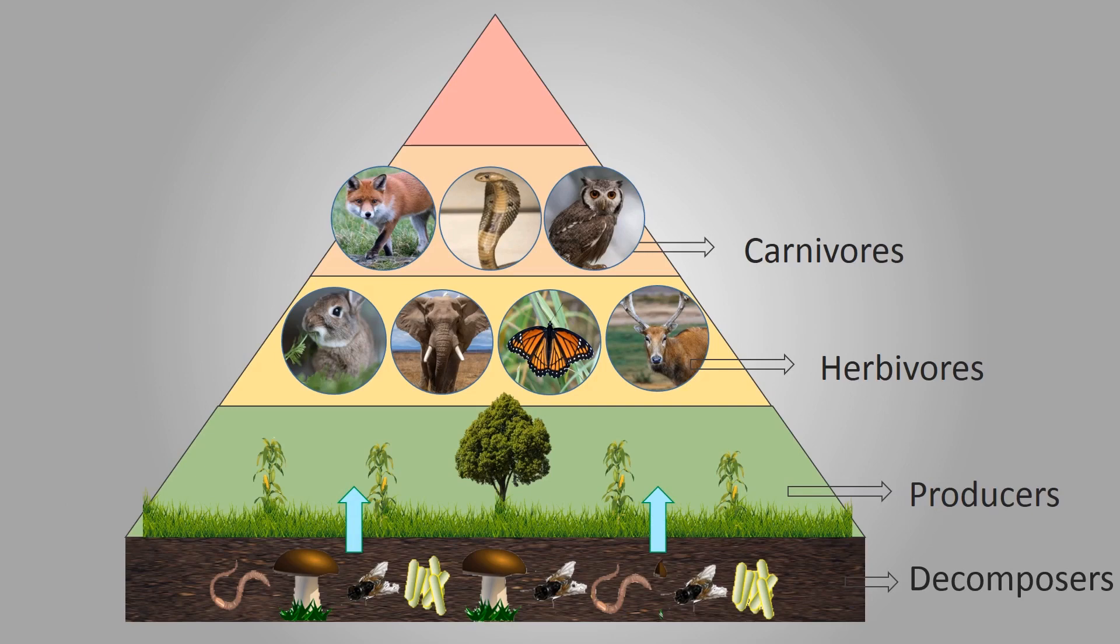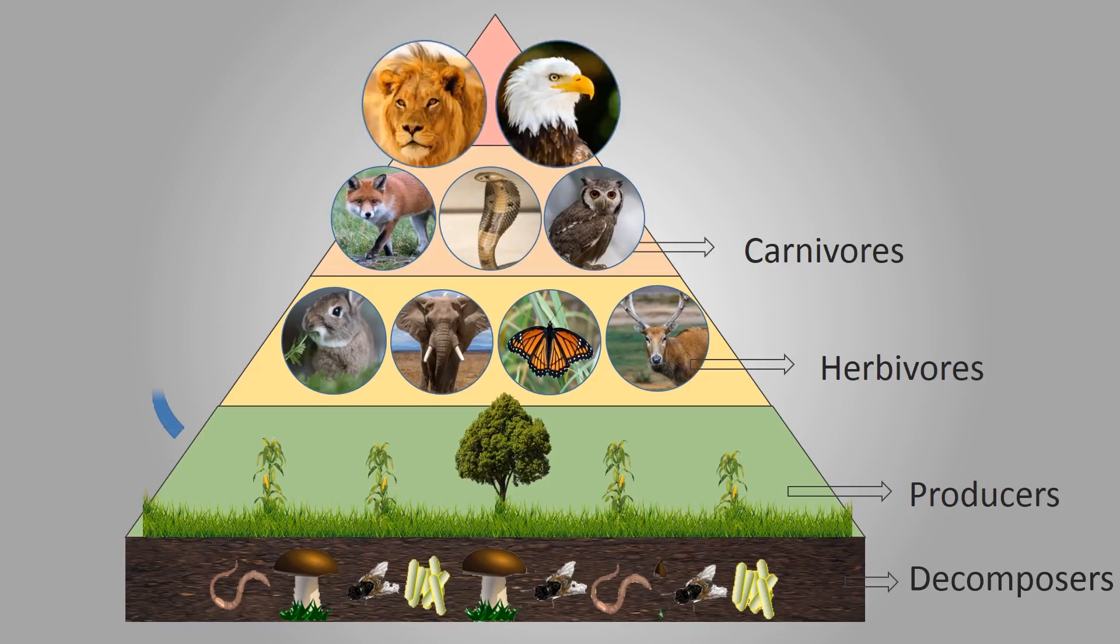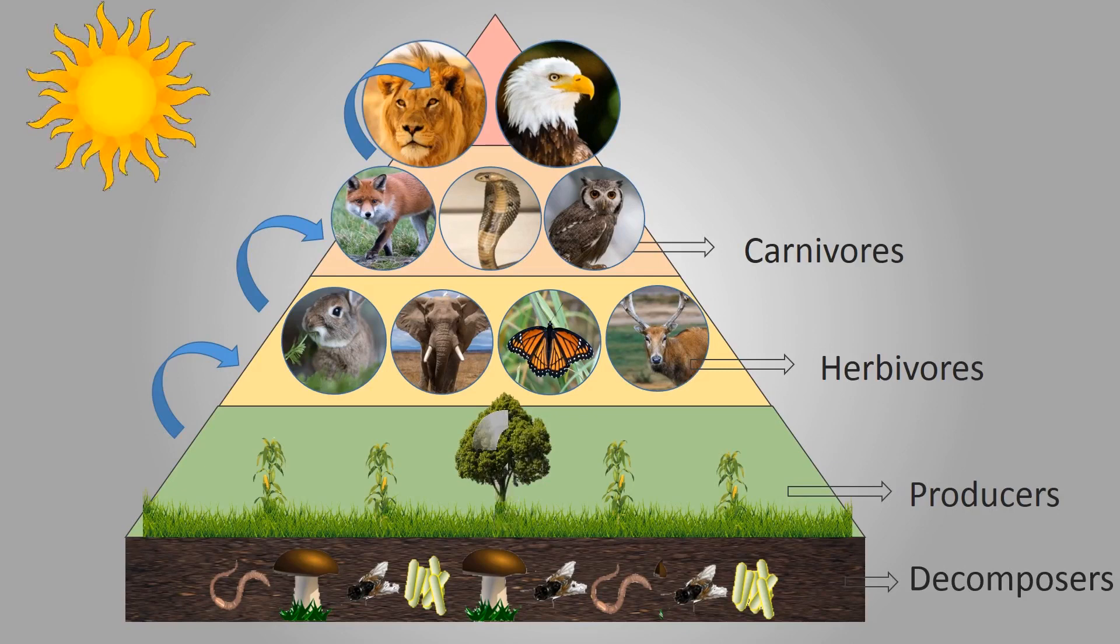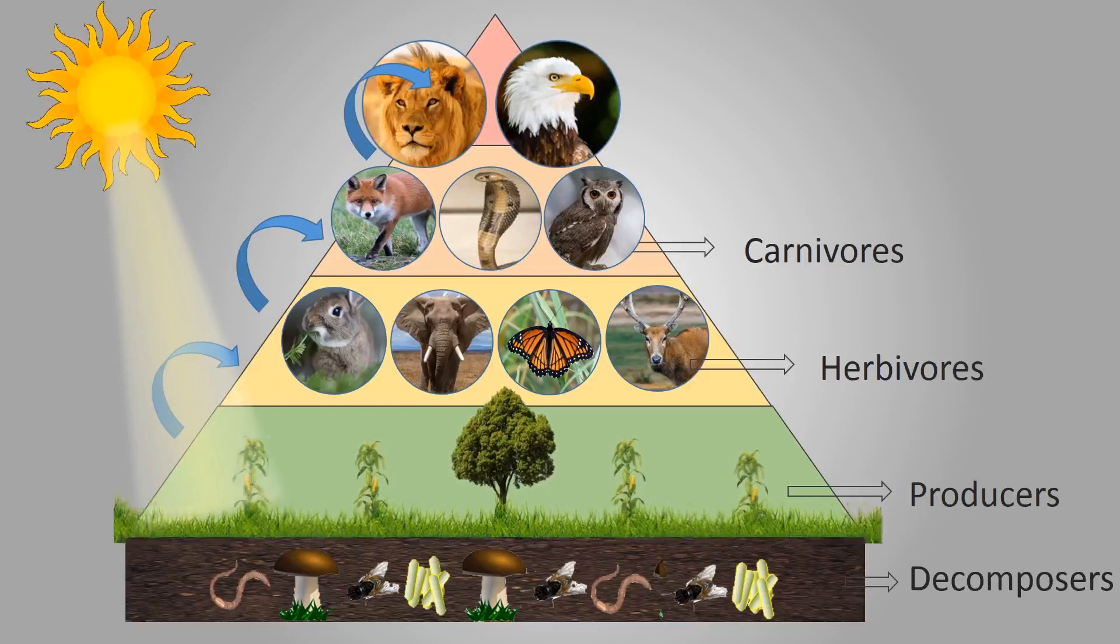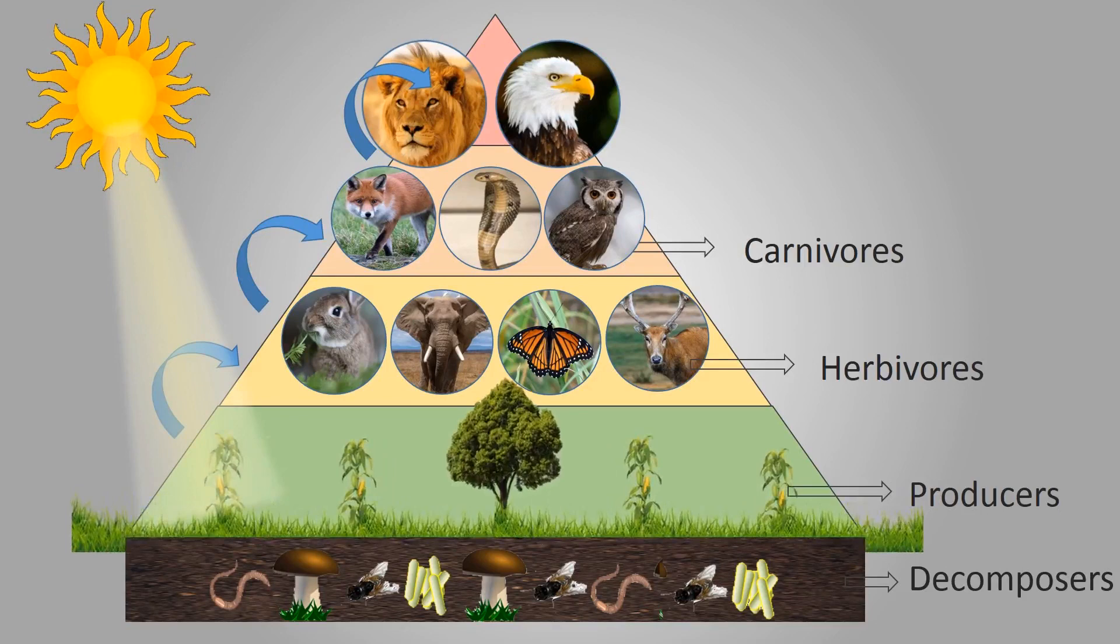Till now, we have seen the energy is transferred from producer to the top consumers. But, from where does producer get energy? The answer is sun. The sun is most important source of energy in an ecosystem. The producers, meaning the green plants of the ecosystem, store some of the solar energy in the form of food.